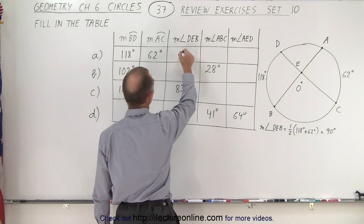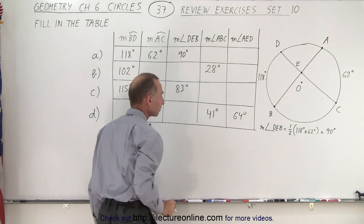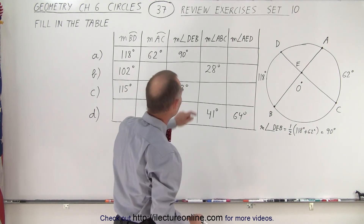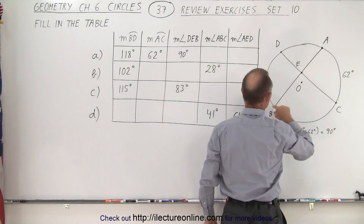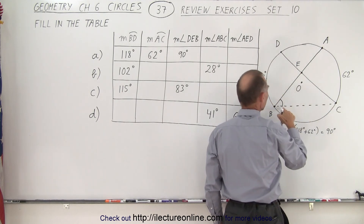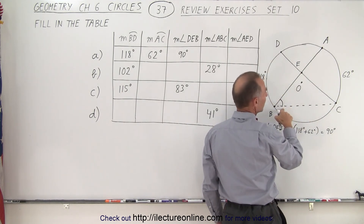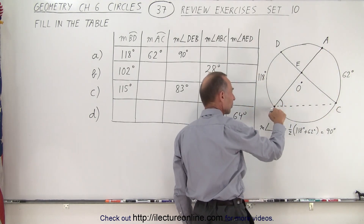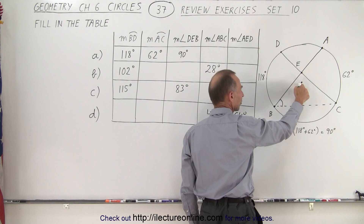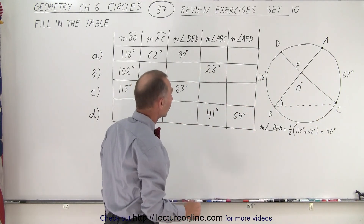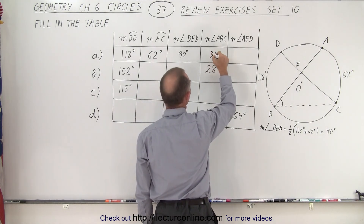That means this angle here is equal to 90 degrees. Next, the measure from A to B to C — that's this angle right here. We know this angle must be half of the arc right there, because it's on the other side of the circle. If it came from the center it would be equal, but on the far side it's only half as much. So half of 62 degrees makes it 31 degrees.